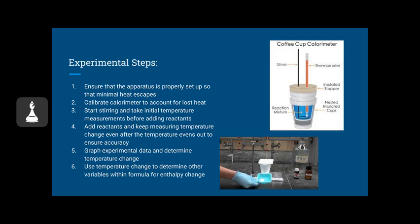So let's ensure that the apparatus is properly set up before we actually do the experiment so that minimal heat escapes. Then we have to calibrate the calorimeter to account for the lost heat that inevitably has to escape. Then we use that constant that we find after calibration, and we factor that into our final equations. Then we're going to start stirring the mixture, but not include the reactants yet. We have to take our initial temperature without adding the reactants. Then when we add the reactants, we have to keep measuring the temperature.